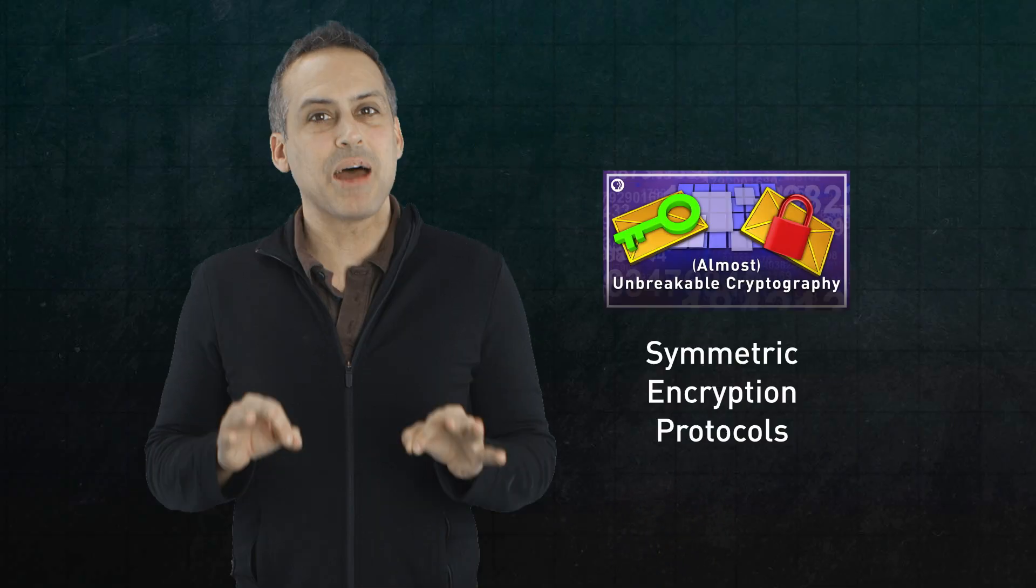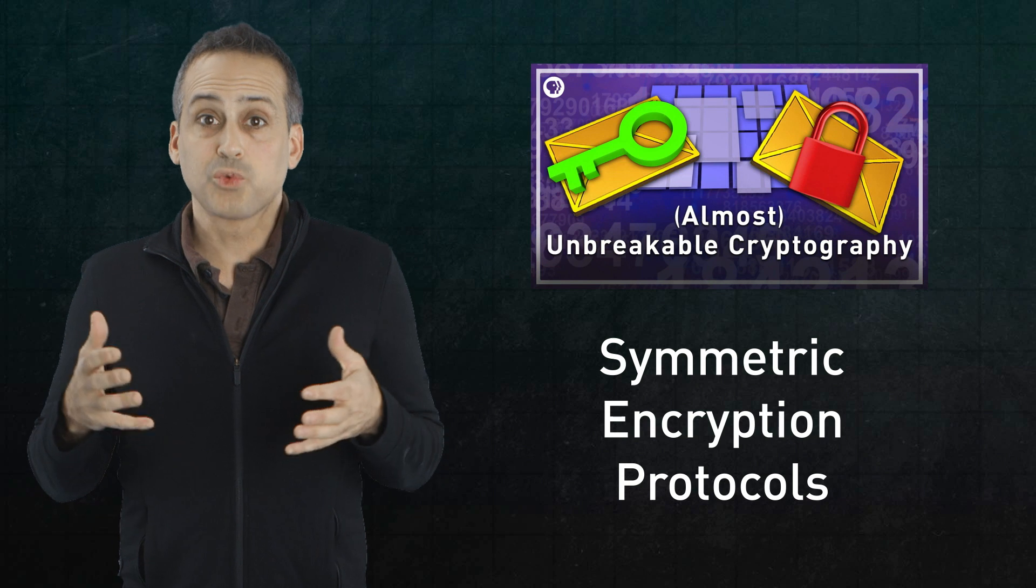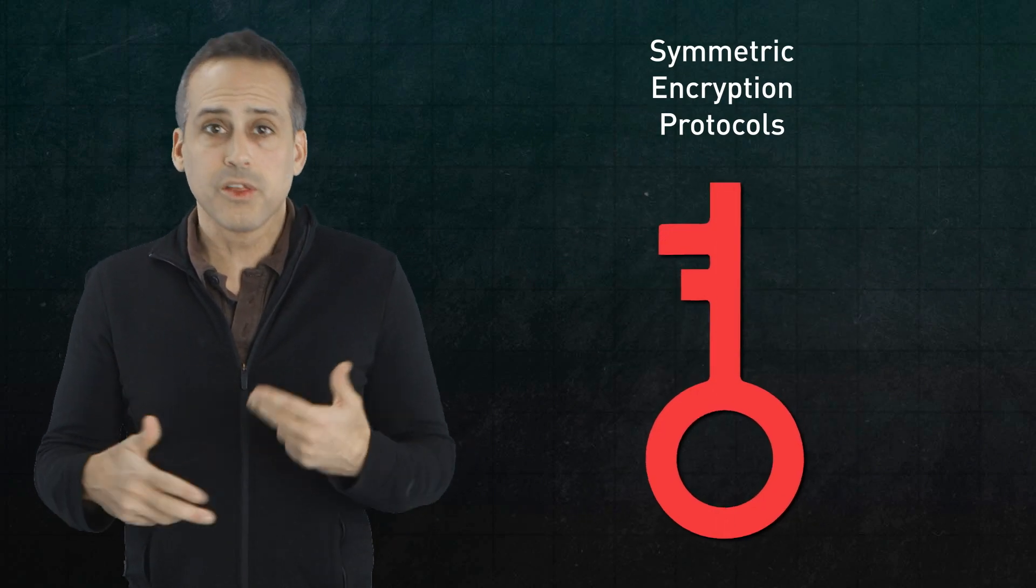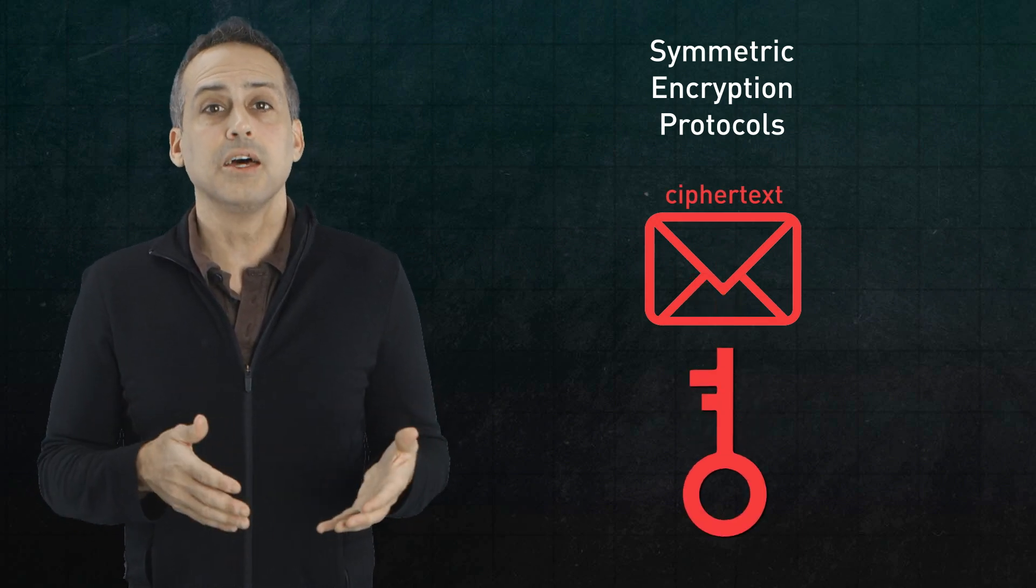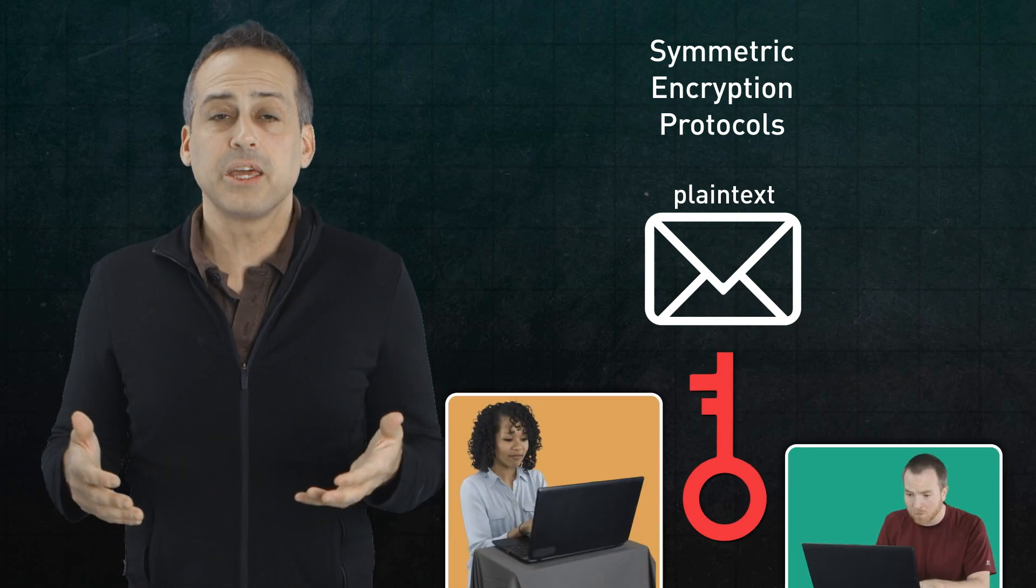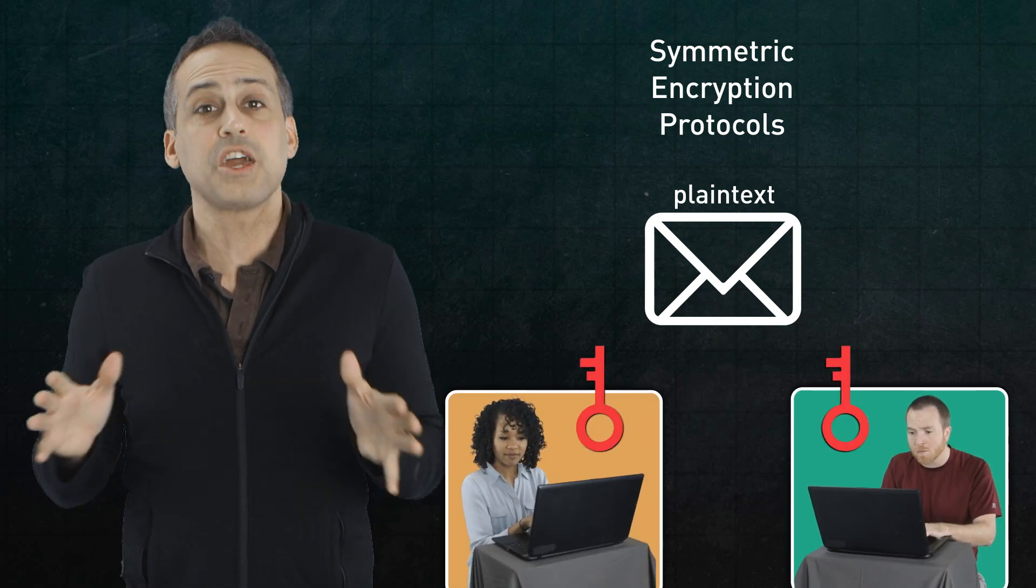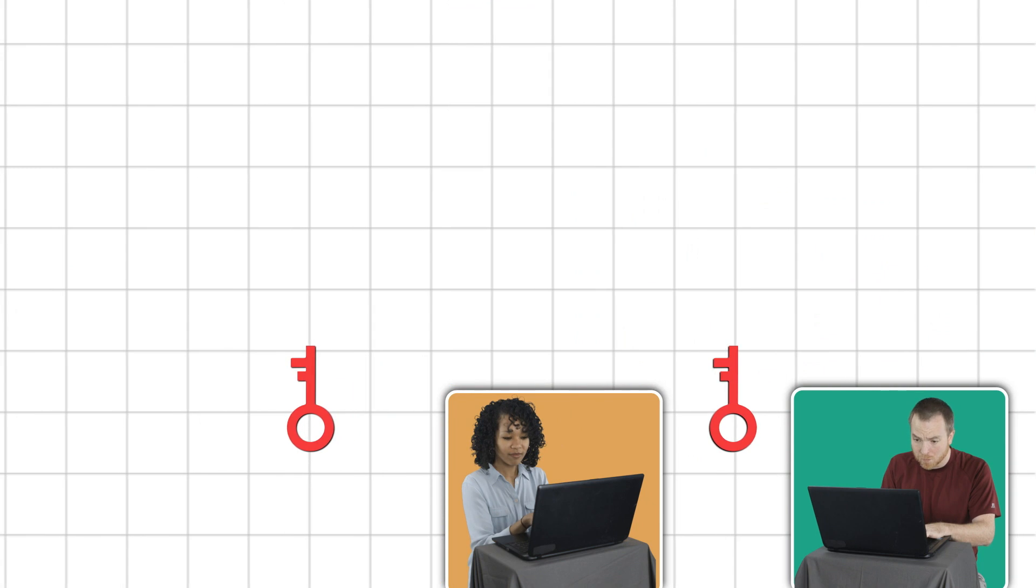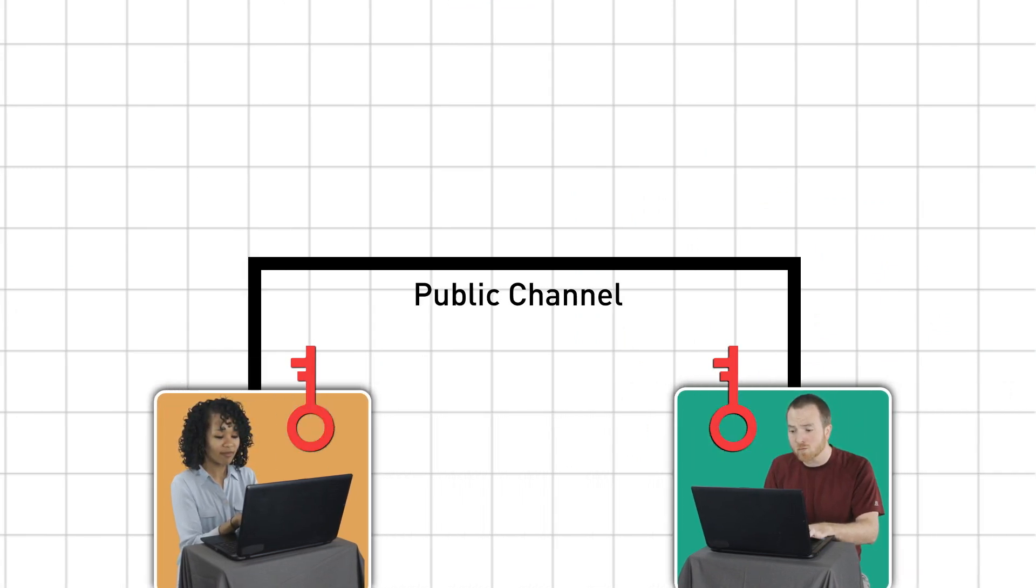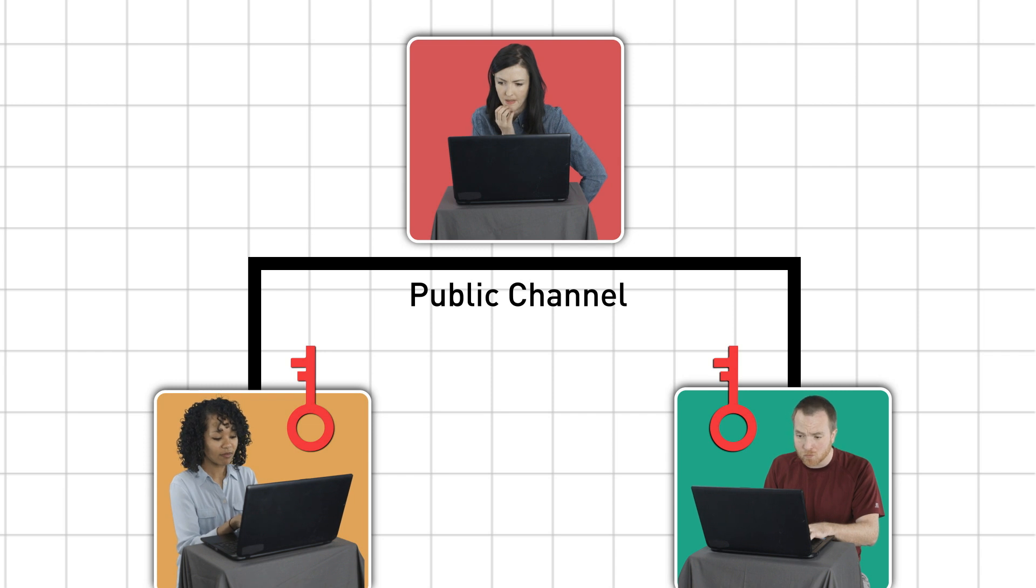Last time, we discussed symmetric encryption protocols, which rely on a user-supplied number called the key to drive an algorithm that scrambles messages. Since anything encrypted with a given key can only be decrypted with the same key, Alice and Bob can exchange secure messages once they agree on a key. But what if Alice and Bob are strangers who can only communicate over a channel monitored by eavesdroppers like Eve? How are they supposed to agree on a secret key in the first place?